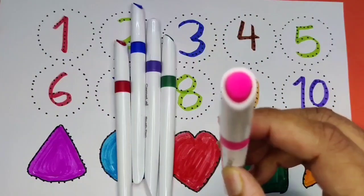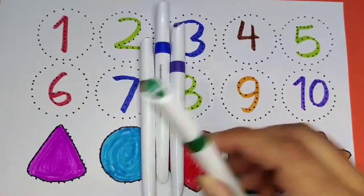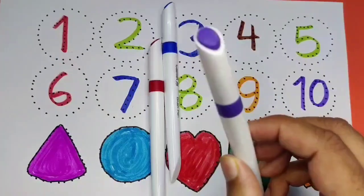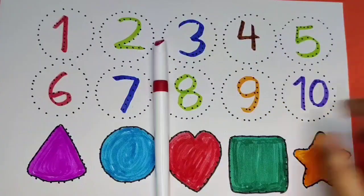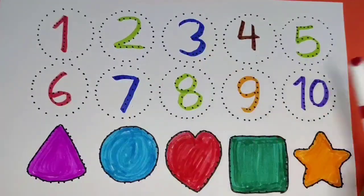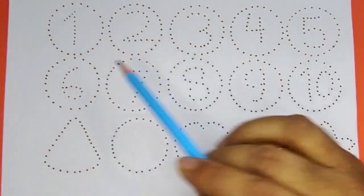Pink color, green color, purple color, blue color and red color. Now we learn the numbers and the shapes.